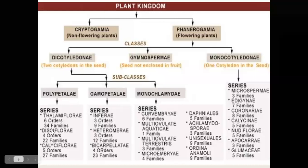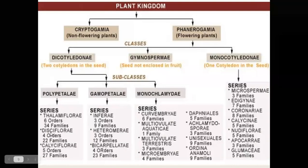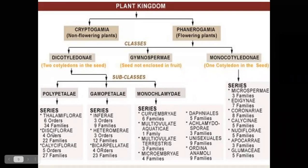The next series is disciflorae. In disciflorae, a disc-like structure is present at the lower part of the floral parts — below the calyx, corolla, androecium, and gynoecium. This disc-like structure contains nectaries. The flowers are hypogynous and show a superior ovary. The disciflorae is classified into four orders and 22 families.